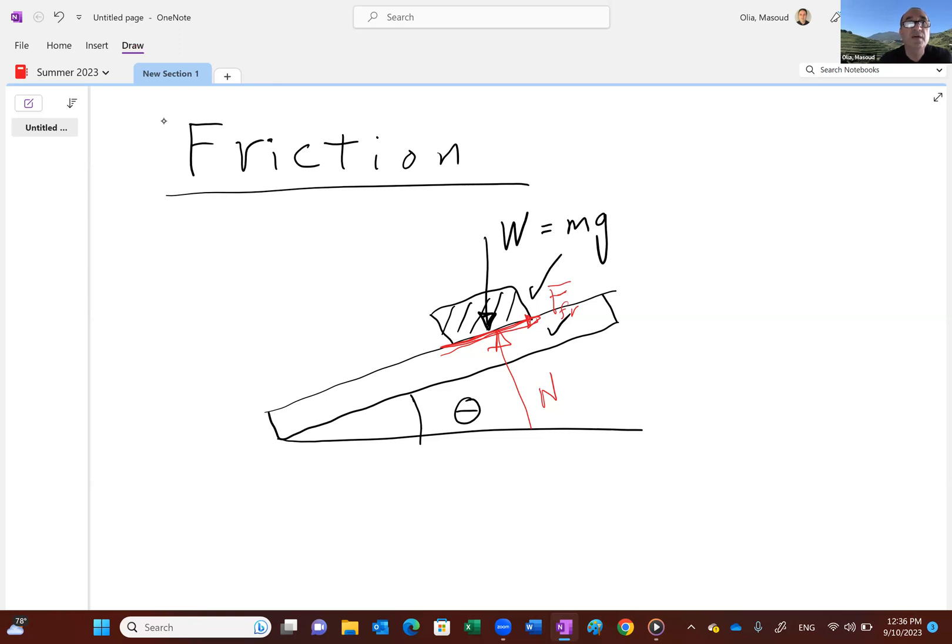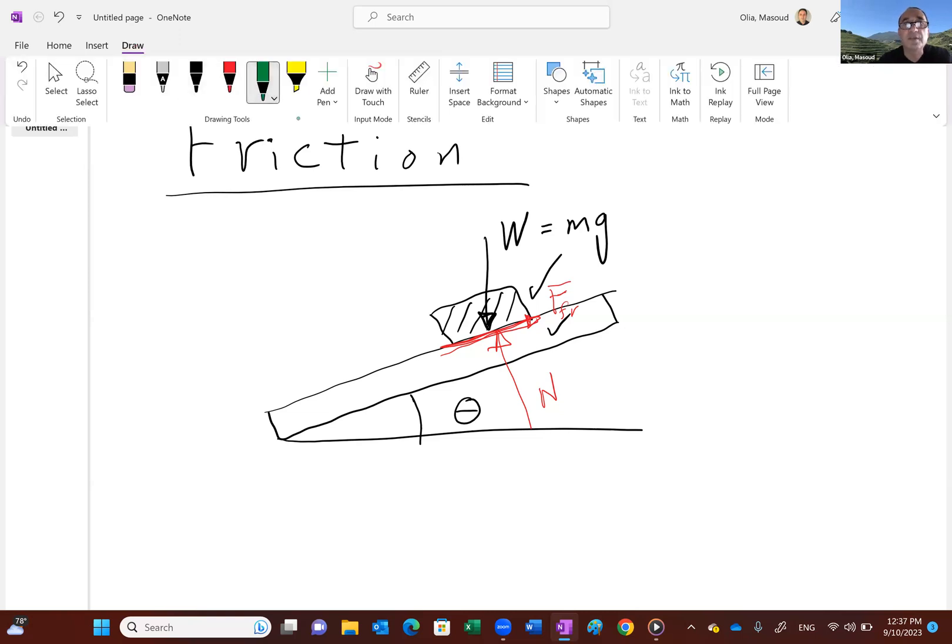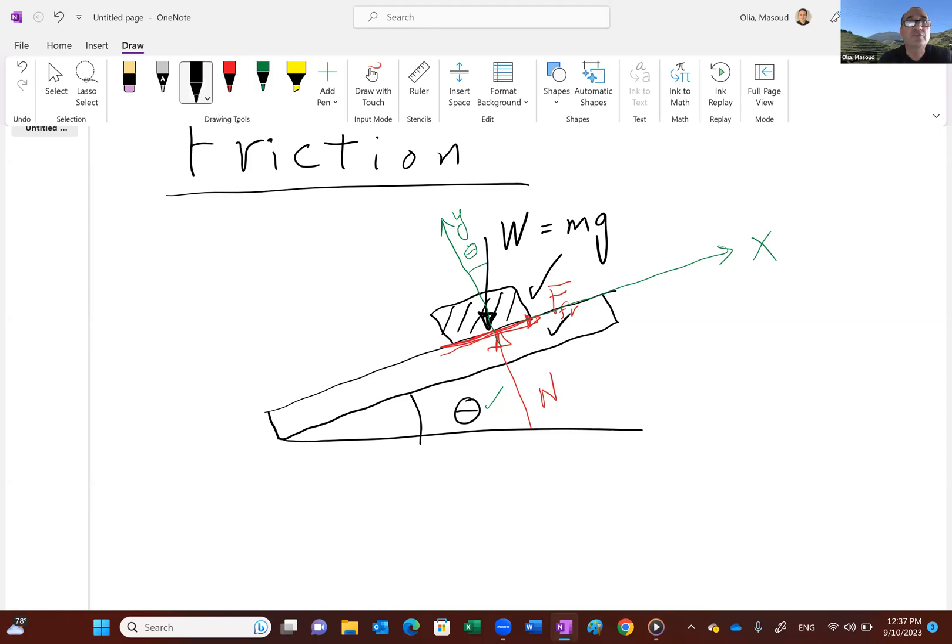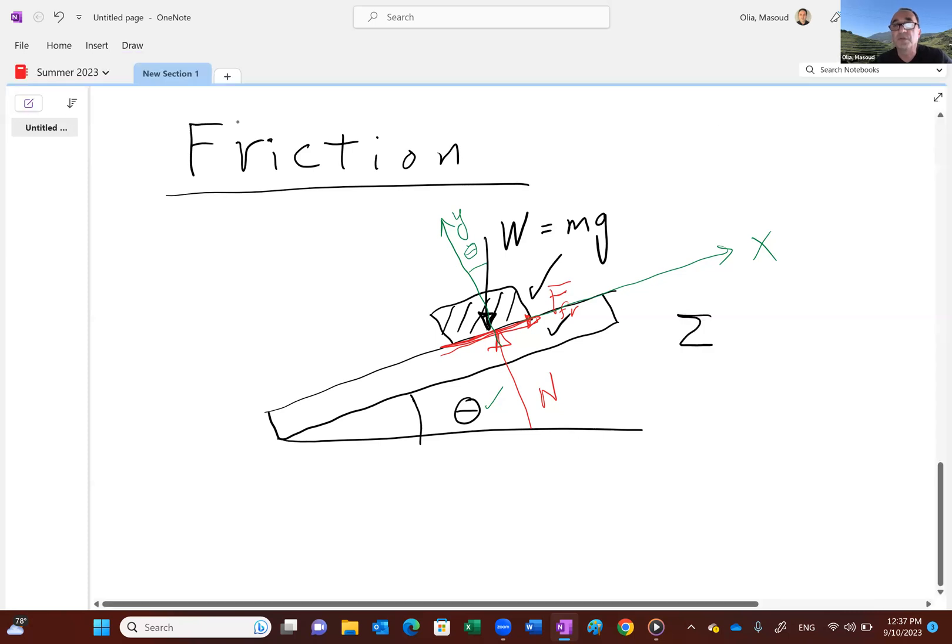Now, if we pick this to be our x-axis and this to be our y-axis, we have seen this many times probably in physics. So this angle obviously is theta, which is the same as this angle. So let's go and balance forces in the x and y direction, assuming that the system, just before the motion starts, is in equilibrium. So sum of the forces in y equals zero.